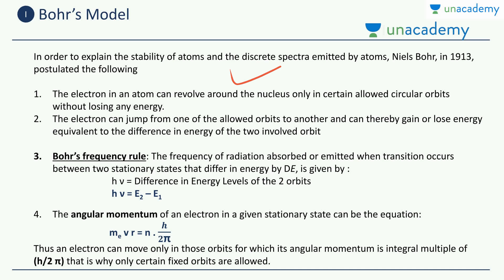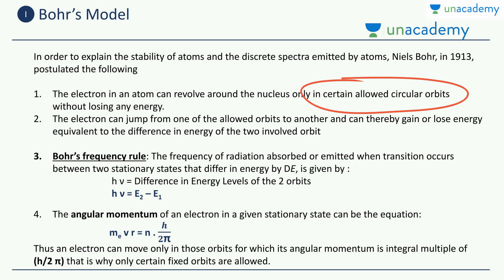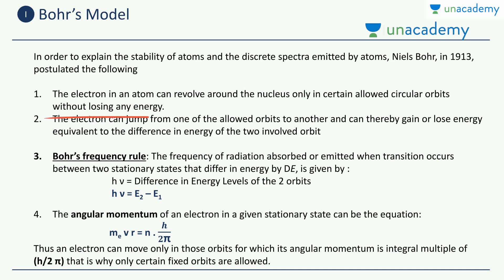The first postulate states that the electron in an atom can revolve around the nucleus only in certain allowed circular orbits — not any random orbits — without losing any energy. As long as the electron is moving in a particular orbit, it will stay in that orbit without absorbing or radiating any energy, without changing its energy level.